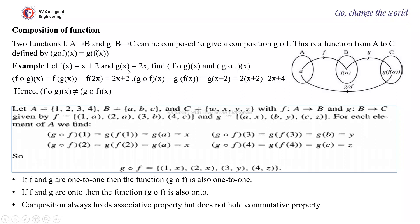Let f(x) = x + 2 and g(x) = 2x. Find fog(x) and gof(x). fog(x) = f(g(x)) = f(2x) = 2x + 2. Whereas gof(x) = g(f(x)) = g(x+2) = 2(x+2) = 2x + 4. So we can see that fog(x) ≠ gof(x).